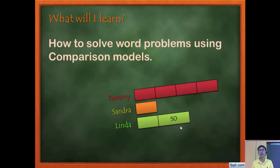How do you identify these kinds of word problems? Usually you have two or three people where you need to compare. Some of the key phrases you will see are: 'four times', 'twice', 'more than', 'less than'. Once you see these key phrases, you may have to use comparison models.